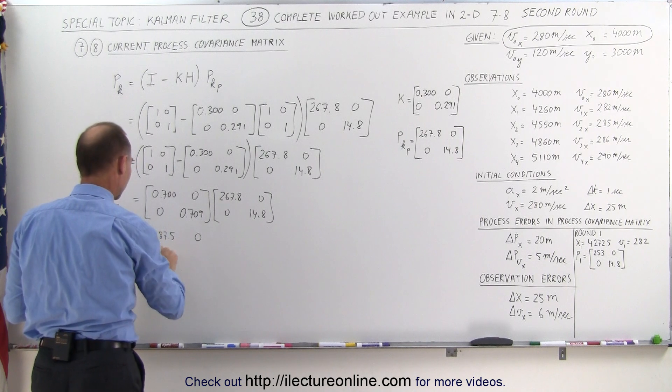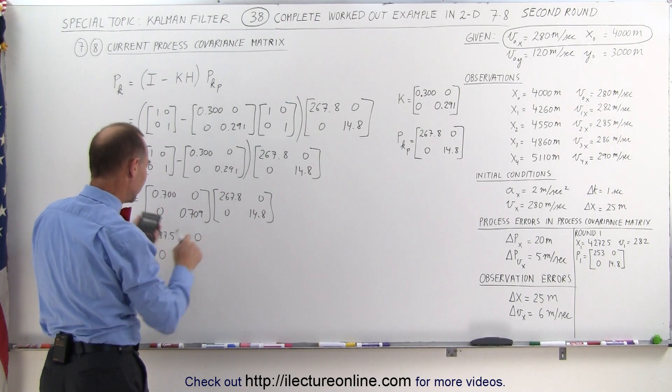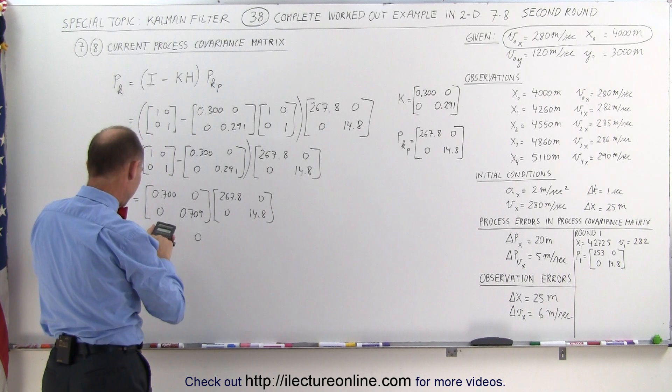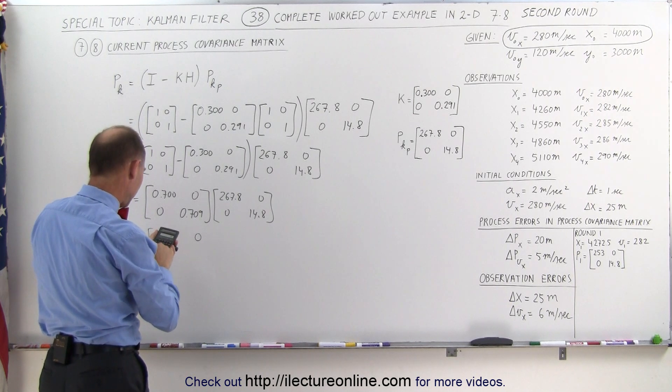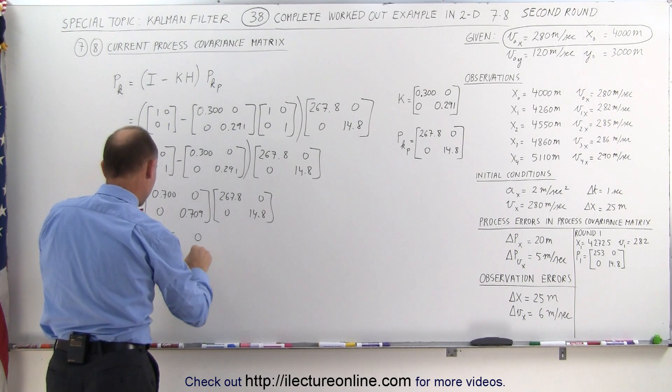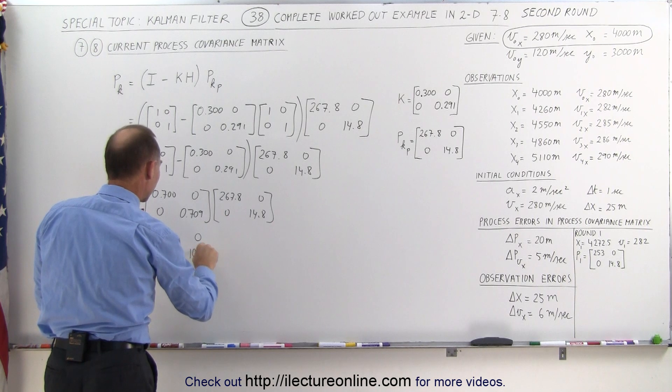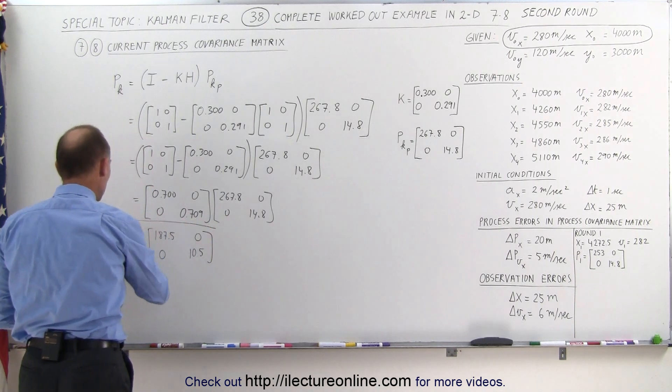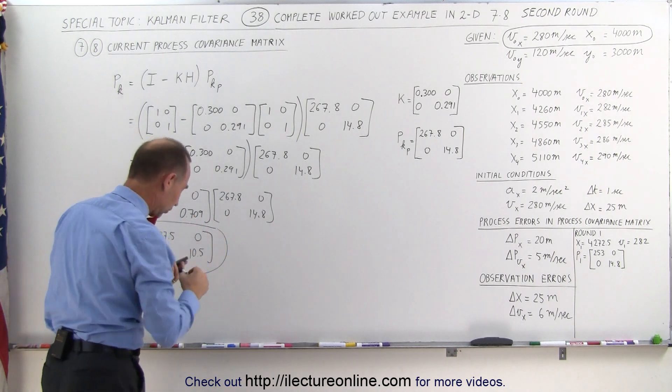This will be 0, this will be 0, and here we get 0.709 times 14.8, and we get 10.5, rounded to one decimal place. This is the new process covariance matrix for the current round.